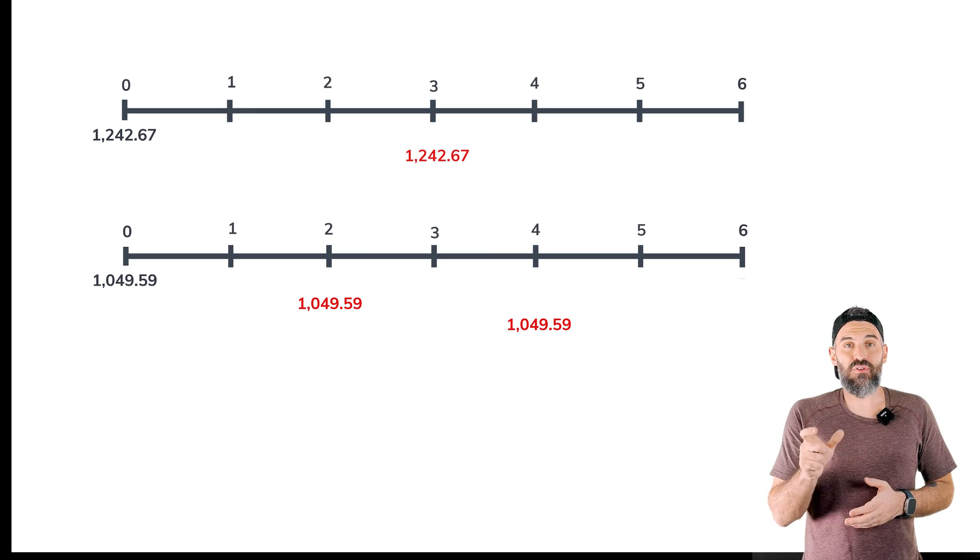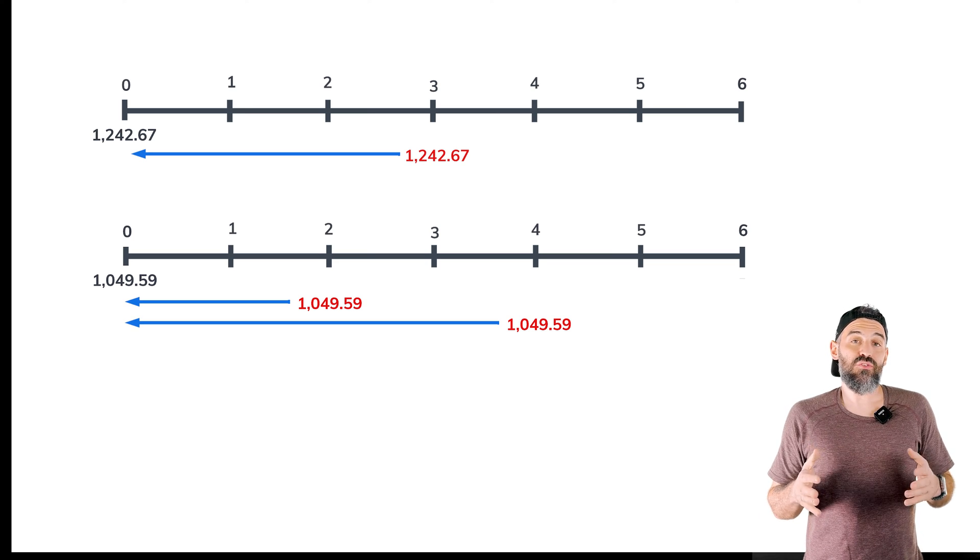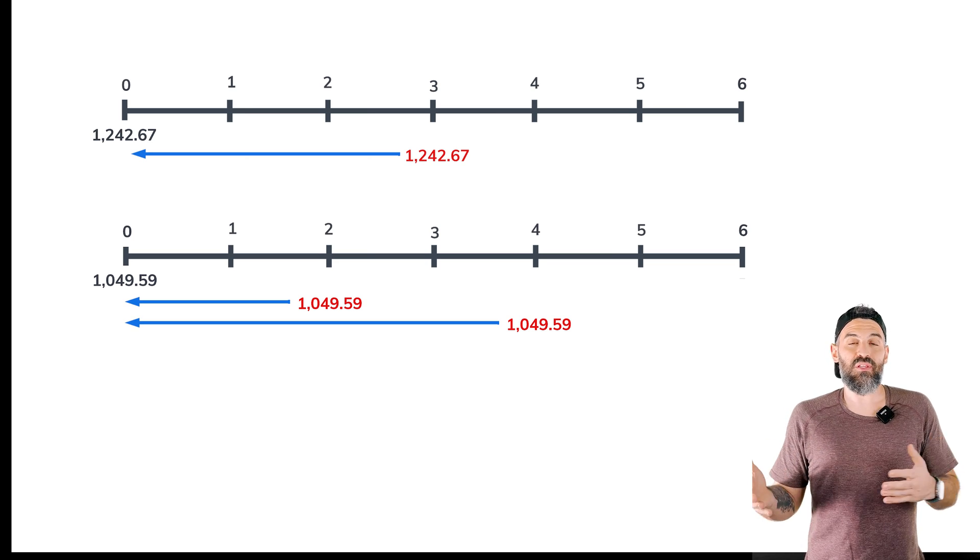Now just take that second net present value and discount it back to the beginning and add it to your first one. And that would give you the net present value using the chain replication method.